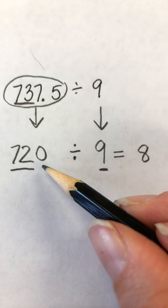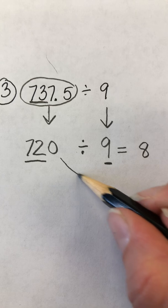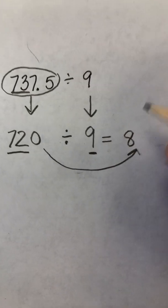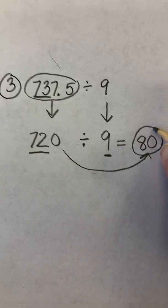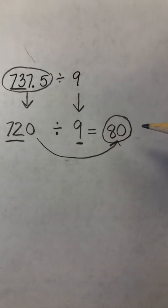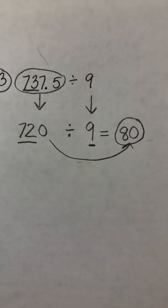And then this 0, since there's only 1, I like to tell my students it's like the odd one out. So we're going to have to take it and move it over here into our quotient. So our final answer here is 80. And you can check it, because 80 times 9 is 720.